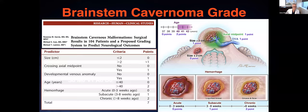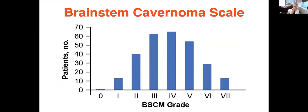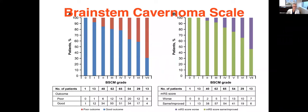So the more points you get, the more dangerous or more risky the surgery is. So in other words, if it's bigger, if it's closer to the middle, if it had an associated venous anomaly, if the patients were older than 40, or if their hemorrhages were more chronic in nature, these are all points that make a brainstem cavernous malformation more risky to take out.